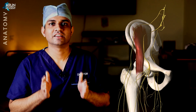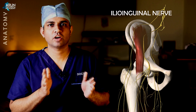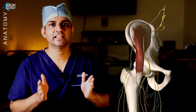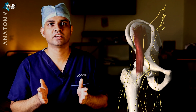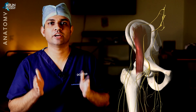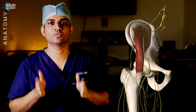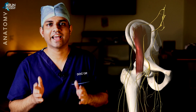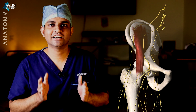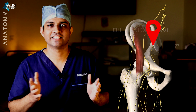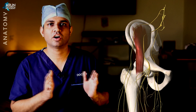The third nerve is the ilioinguinal nerve. Fascia iliaca compartment block is not the classically described block for the ilioinguinal nerve, but there is a possibility of getting an ilioinguinal nerve block with it. If you want to know more, please watch the video on ilioinguinal and iliohypogastric nerve blocks — I will give the link in the description. The fourth nerve is the obturator nerve, and whether it will be blocked is controversial. There are studies saying it will be blocked with a suprainguinal approach and others saying it is not affected.